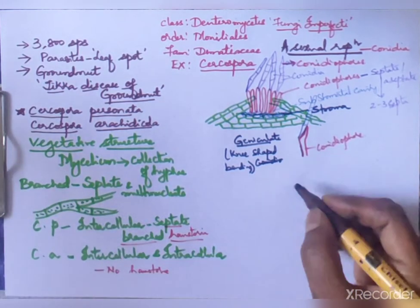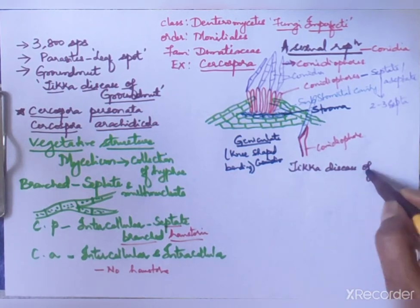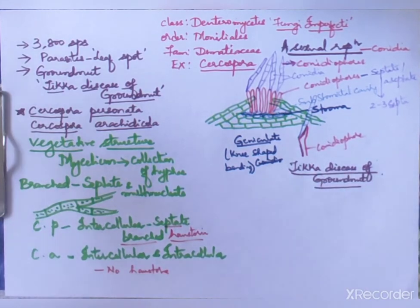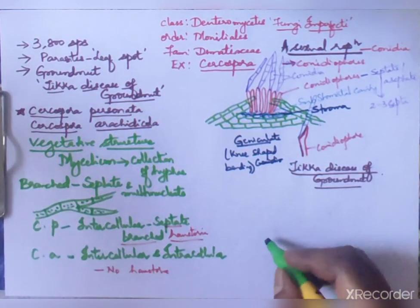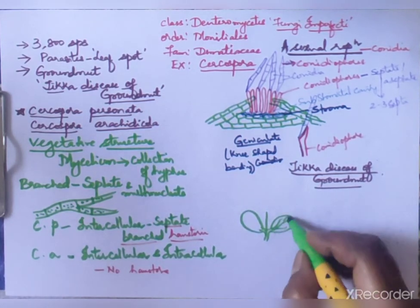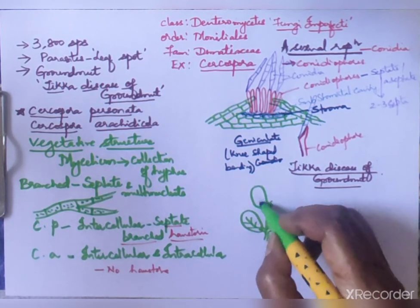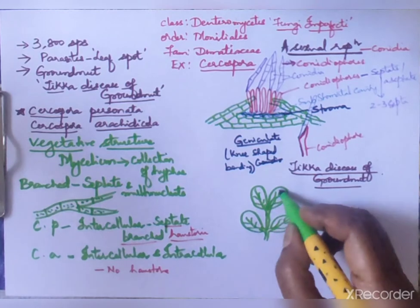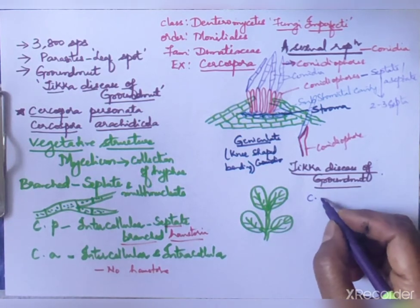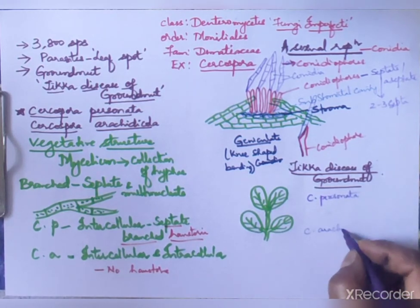Tikka disease of groundnut is caused by two species: Cercospora arachidicola and Cercospora personata. It is one of the most serious diseases of the groundnut and is a very common disease wherever groundnut is grown, causing much damage to the plant.